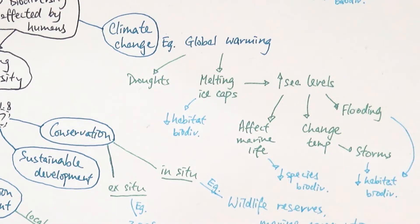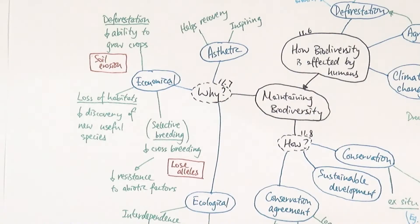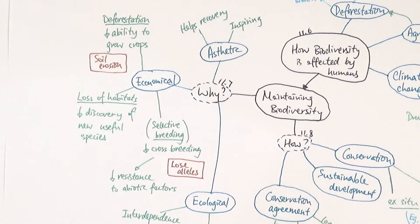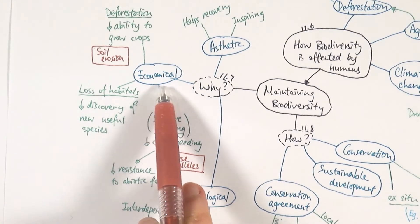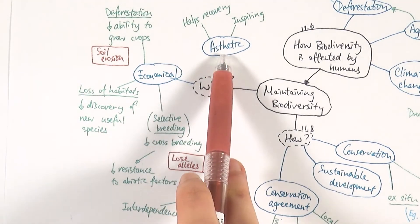Many of these things are interlinked, so use common sense and current news when answering exam questions. Now we'll consider why we need to maintain biodiversity. Species are interdependent — they rely on other species for their survival. There are three reasons to maintain biodiversity: ecological reasons, economical reasons, and aesthetic reasons.